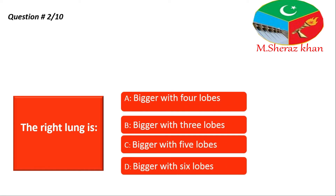Four options are given: option A — it's bigger with four lobes, option B — bigger with three lobes, option C — bigger with five lobes, option D — bigger with six lobes. I give you ten seconds, you just think about it and then I tell you what is the right answer.